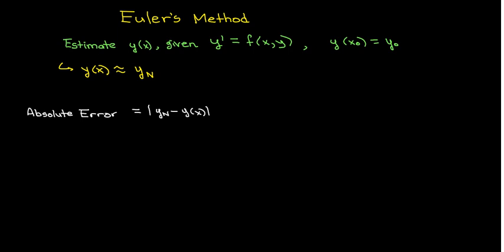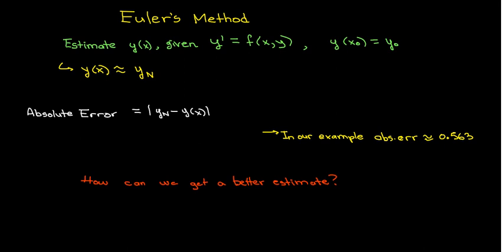All right. So we may want to look at this notion of the absolute error. That's the error between the approximated value. So the difference between the exact value and the approximated value. And then we take the absolute value of it. So in our example that we just worked out, the absolute error was 0.563.